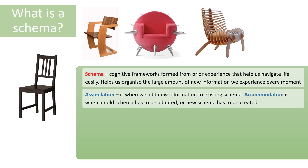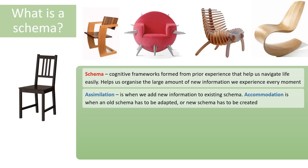Sometimes we come across an object which doesn't act in the way our previous schema suggested. If we sat in a curved rocking chair, we might find it would rock from side to side, so we would have to adapt our old schema about what a chair really is — or maybe create a new schema, such as the schema of a rocking chair. This is called accommodation. Just make sure you're familiar with the idea of what a schema is.